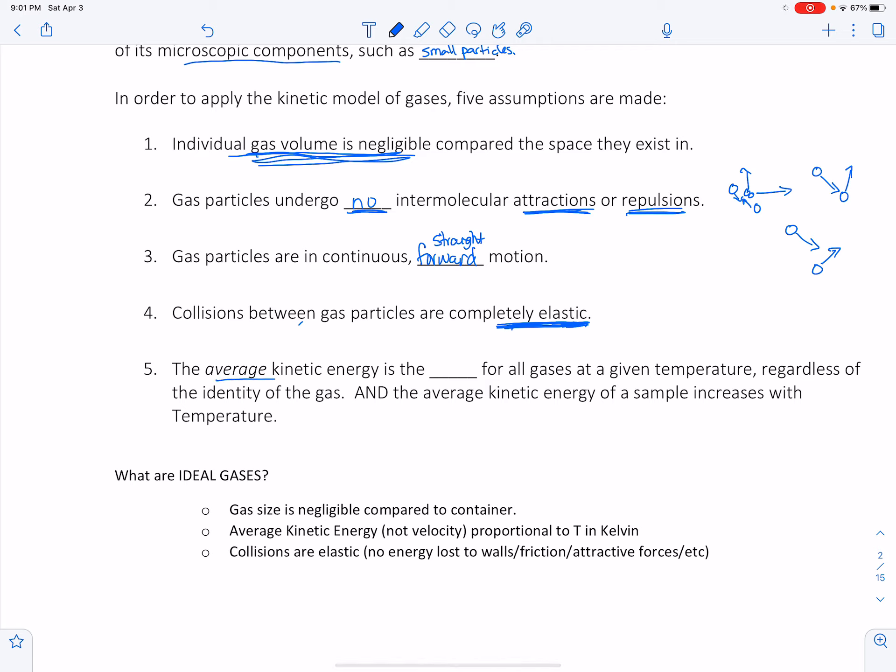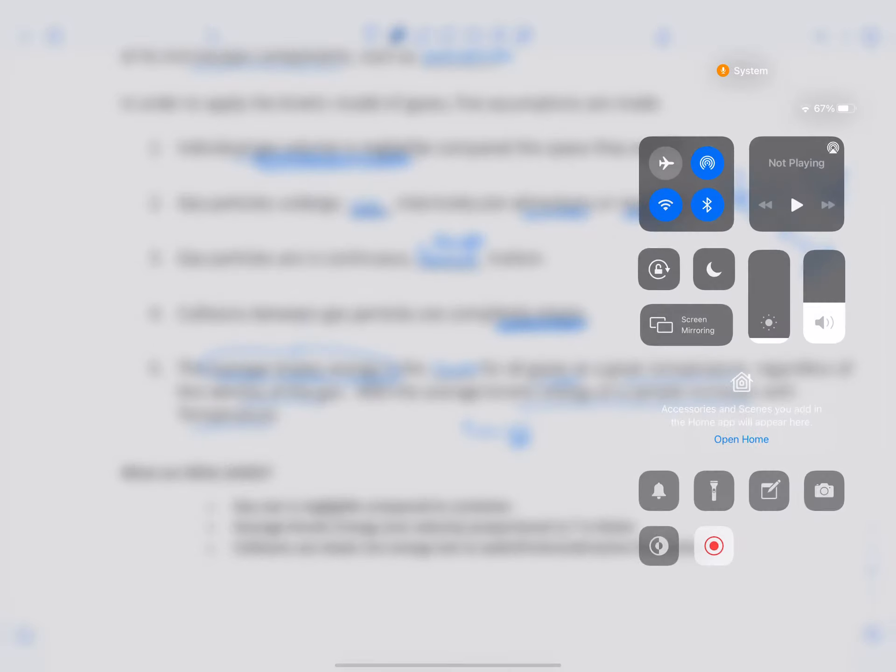And then here's the biggie. The average kinetic energy is the same for all gases at a given temperature, regardless of the identity. This might be surprising, but like you saw, the kinetic energy of a sample increases with temperature. So at any certain temperature, the average kinetic energy that they're bouncing off of each other with does stay the same for all of them at a given temperature. So at increased temperature they will have higher average kinetic energy. Again, average, because they're going to be slowing when they hit each other a little and speeding up when they hit each other a little.